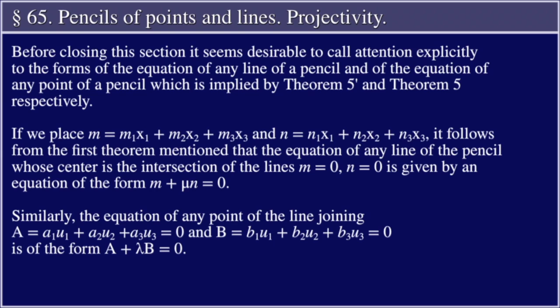If we place M = m₁x₁ + m₂x₂ + m₃x₃ and N = n₁x₁ + n₂x₂ + n₃x₃, it follows from the first theorem that the equation of any line of the pencil takes the form A + λB = 0.